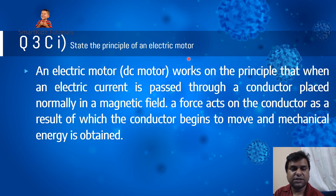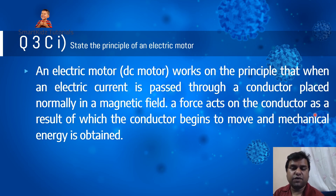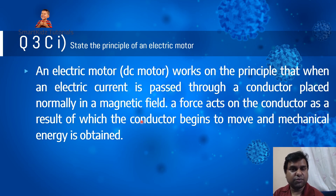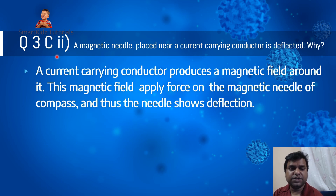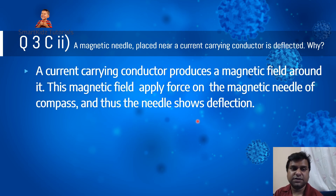Question 3C1: state the principle of an electric motor. An electric motor (DC motor) works on the principle that when an electric current is passed through a conductor placed normally in a magnetic field, a force acts on the conductor, as a result of which the conductor begins to move and mechanical energy is obtained. Question 3C2: a magnetic needle placed near a current-carrying conductor is deflected — why? A current-carrying conductor produces a magnetic field around it, and this magnetic field applies force on the magnetic needle, causing deflection.